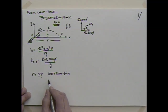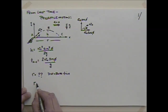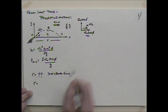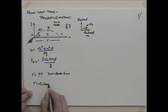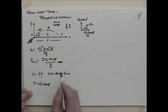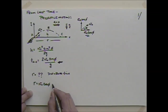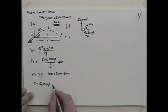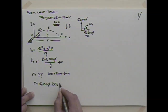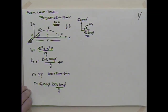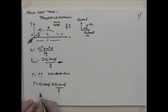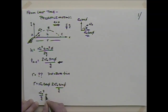To find the range, we go back to distance equals rate times time. The range is equal to the rate — which is v₀ cosine φ — times the time. The time the projectile is in the air is 2 times v₀ times sine φ divided by g. So the range expression becomes v₀ squared divided by g times 2 cosine φ times sine φ.